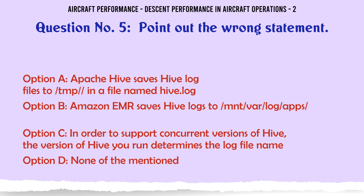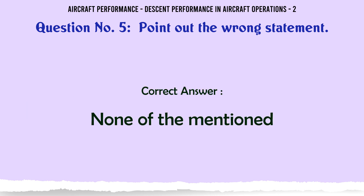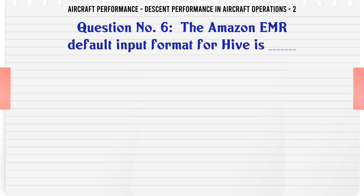Point out the wrong statement: a) Apache Hive saves Hive log files to /tmp/username in a file named hive.log. b) Amazon EMR saves Hive logs to /mnt/var/log/apps. c) In order to support concurrent versions of Hive, the version of Hive you run determines the log file name. d) None of the mentioned. The correct answer is none of the mentioned.